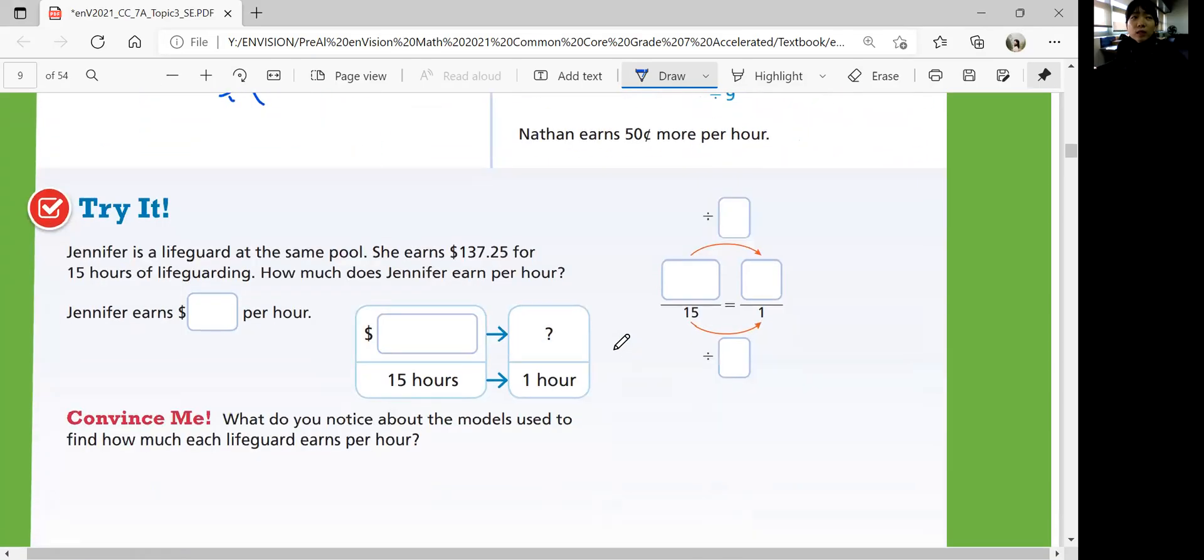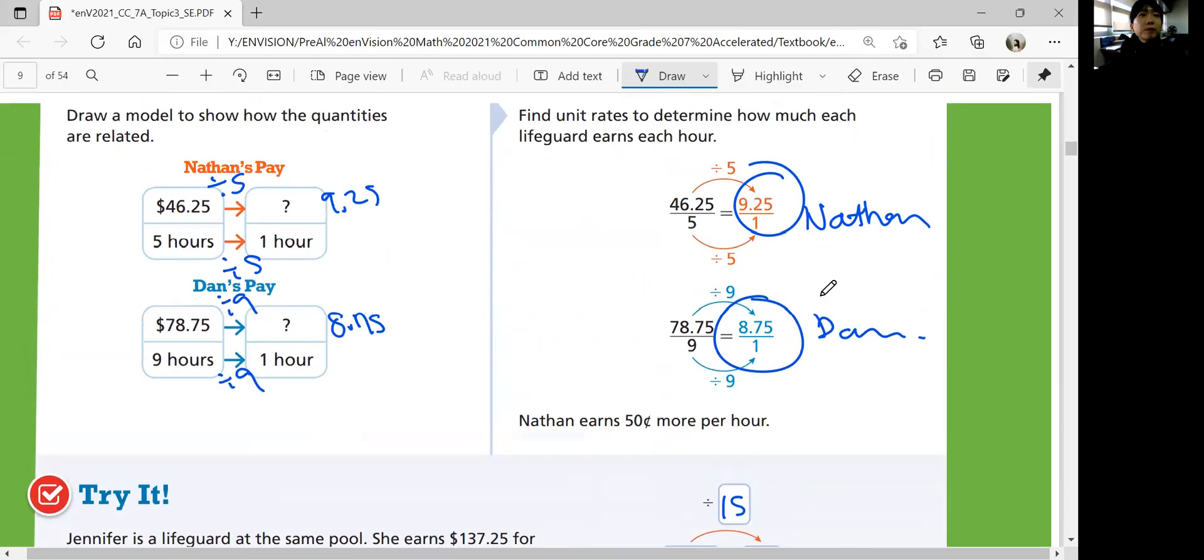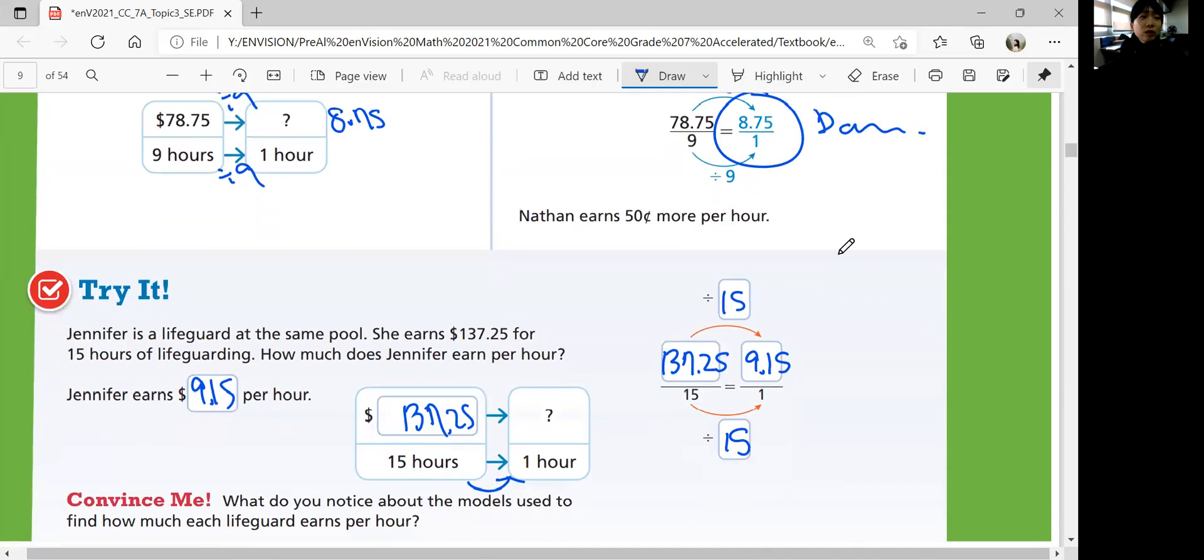Let's look at this try question. Jennifer is a lifeguard at the same pool. She earns $137.25 for 15 hours of lifeguarding. How much does she earn per hour? So you have $137.25 per 15 hours for her. In order to get one hour, you're dividing 15 by 15. So you have to divide $137.25 by 15. What do you get? 9.15. So she earns $9.15 per hour, and that's more than Dan but less than Nathan. She's right in the middle.